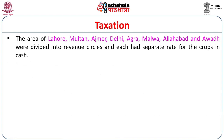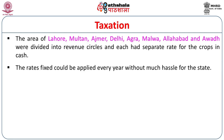The areas of Lahore, Multan, Ajmer, Delhi, Agra, Malwa, Allahabad, and Awadh were divided into revenue circles, and each had a separate rate for crops and cash. The rates fixed could be applied every year without much hassle for the state.